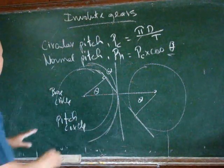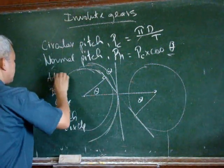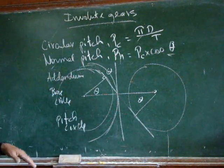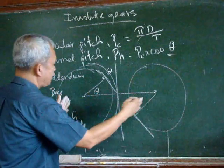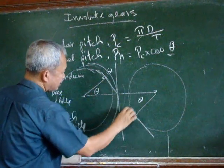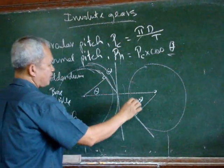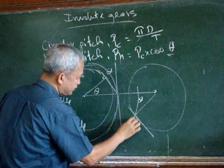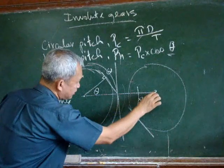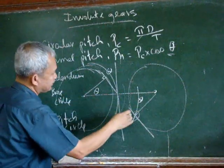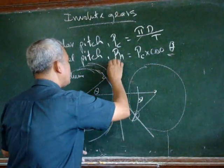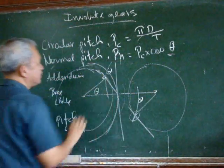Here. Now there is a limit to this addendum. It can be any value here, but with regards to involute gears, it can be any diameter there, but it must not go beyond this point at which the line of action intersects or is tangent to the base circle.